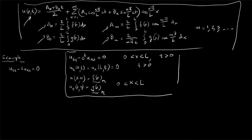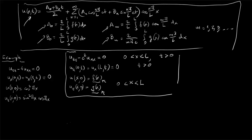Let us make an example. We consider the wave equation with c equals 2 and L equals 1, on the interval from 0 to 1, with f of x and g of x given explicitly. We know the solution is given by the general formula, and because we have explicit forms of f and g, we can calculate the coefficients a_0, b_0, a_m, and b_m explicitly.